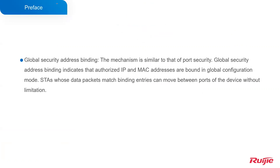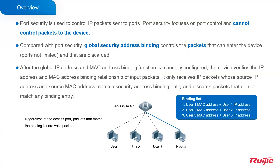Global security address binding has a mechanism similar to that of port security. It indicates that authorized IP and MAC addresses are bound in global configuration mode. STAs whose data packets match binding entries can move between ports of the device without limitation. It is used to control which packets can be forwarded or received by the interfaces, and to control IP packets sent to ports.